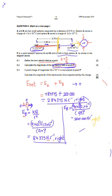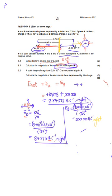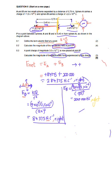Part 8.3, a point charge of magnitude 3 times 10 to the minus 9 is now placed at point P. Calculate the magnitude of the electrostatic force experienced by this charge. So what I'm going to do is I'm going to redraw this diagram just to see what we have here.